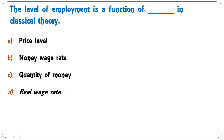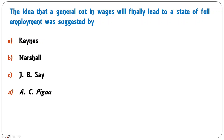Next question: the level of employment is a function of what in classical theory — price level, money wage rate, quantity of money, or real wage rate? Under classical theory it is the real wage rate which influences the level of employment, so the level of employment is a function of real wage rate. The correct answer is D.